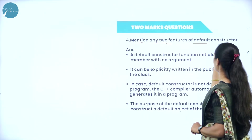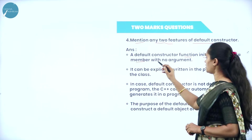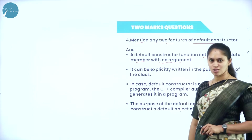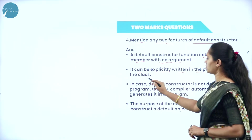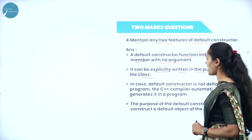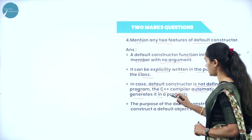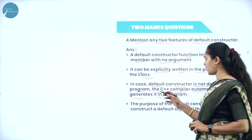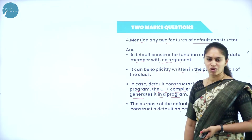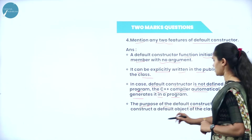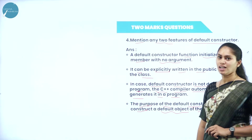Next, mention any two features of default constructor. What do you mean by default constructor? It is a function which initializes the data member with no argument. The function which does not accept parameters is also considered as default constructor. It can be explicitly written in the public section of the class. If default constructor is not defined in a program, the C++ compiler automatically generates it. The purpose of the default constructor is to construct a default object of the class type.